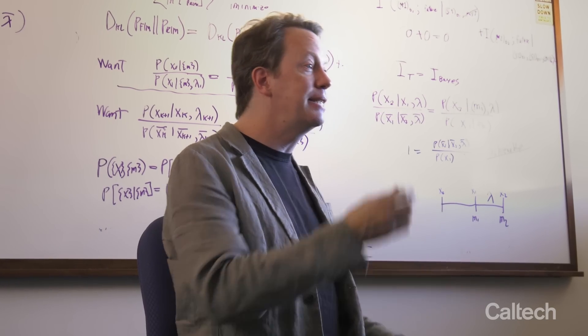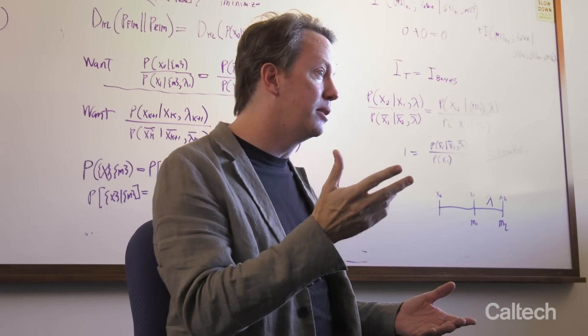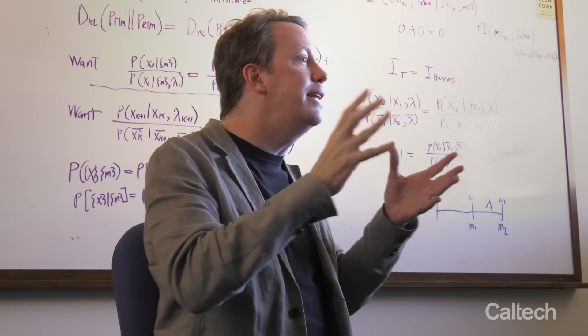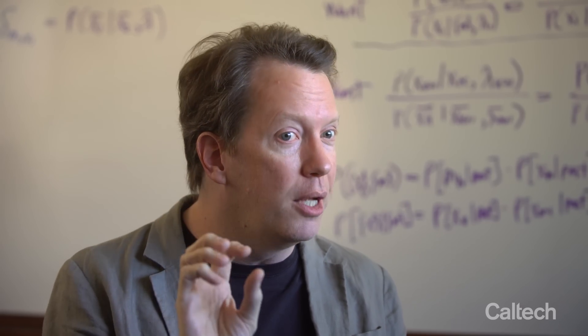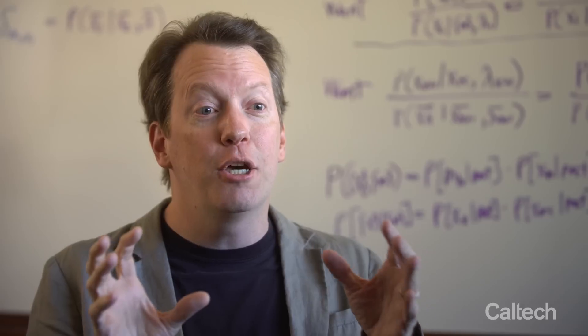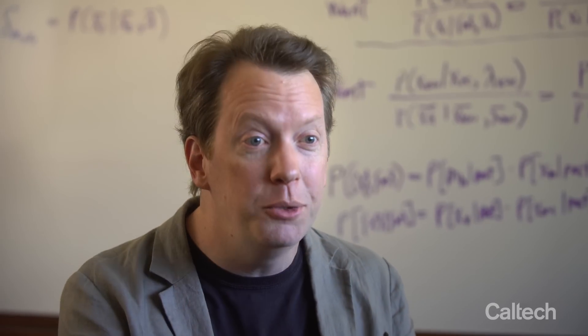One of the things about quantum mechanics is that a system can be in a superposition of two different possible things that it would look like if you were to look at it. So an electron could be spinning clockwise or counterclockwise. Quantum mechanically, it could be both at the same time until you see it.